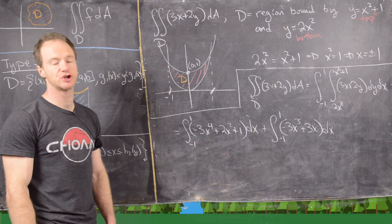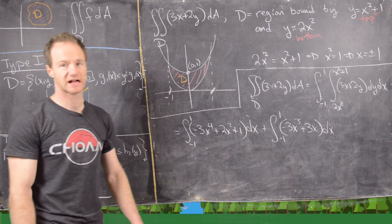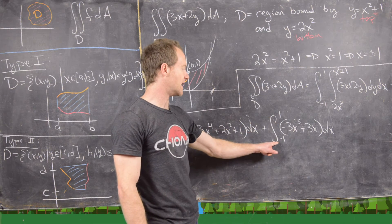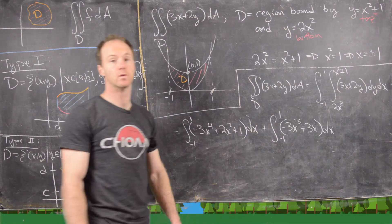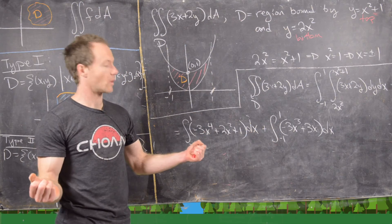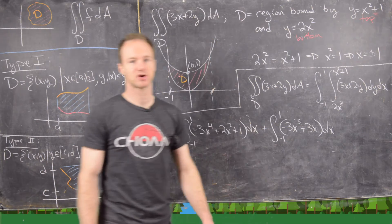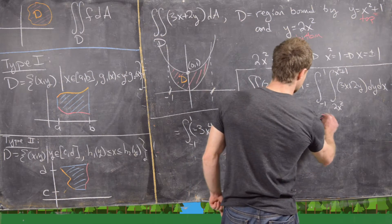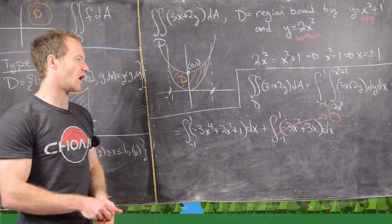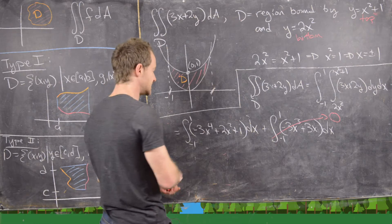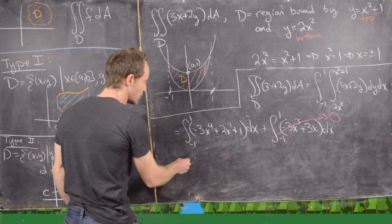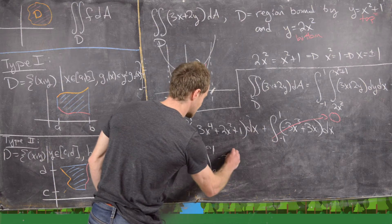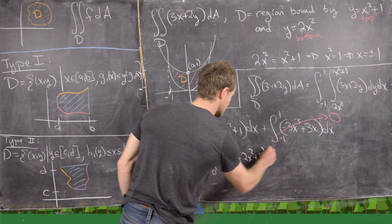We use a symmetry trick: split the integral into even-exponent terms and odd-exponent terms. The integral is over [−1, 1], which is symmetric about the origin. The odd-function terms (−3x³ + 3x) integrate to 0 over a symmetric interval. For the even-function terms (−3x⁴ + 2x² + 1), we use the even-function property: the integral from −1 to 1 equals 2 times the integral from 0 to 1 of −3x⁴ + 2x² + 1, dx.